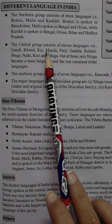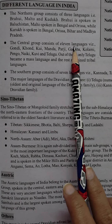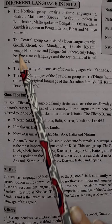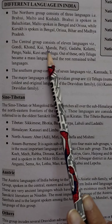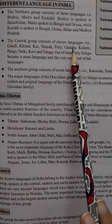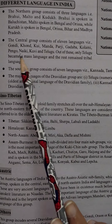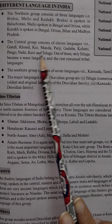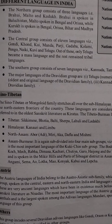The Central group consists of 11 languages: Kondi, Kon, Kui, Manda, Balji, Katapa, Kolomi, Pengo, Naiki, Kui, and Kelupu.